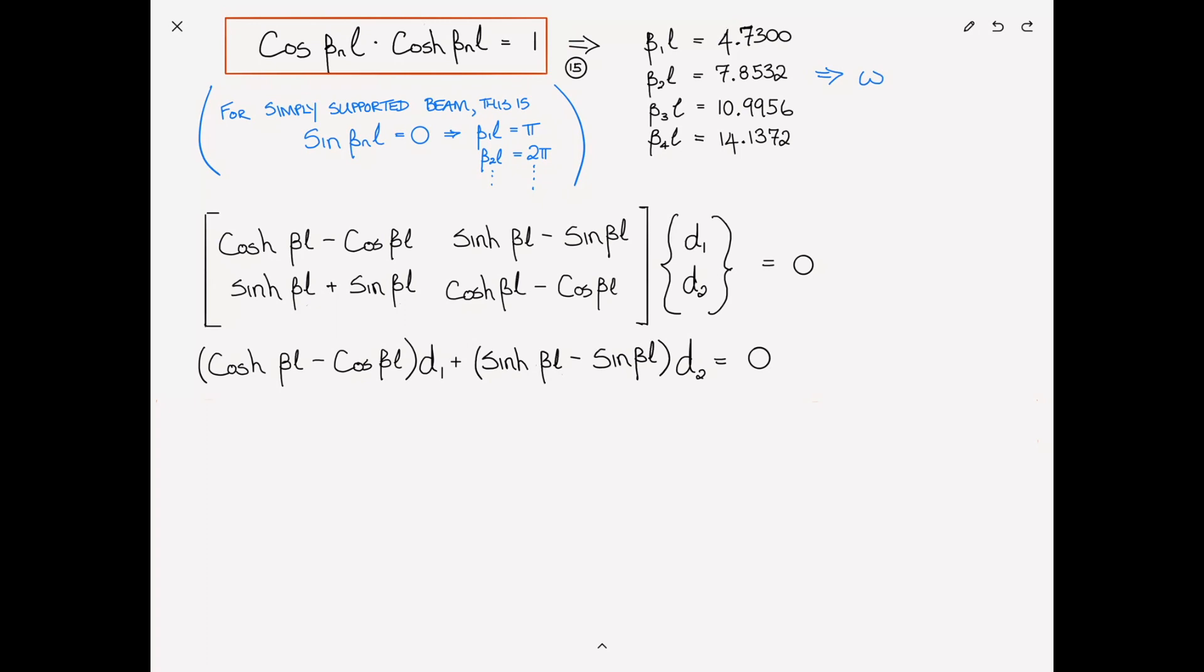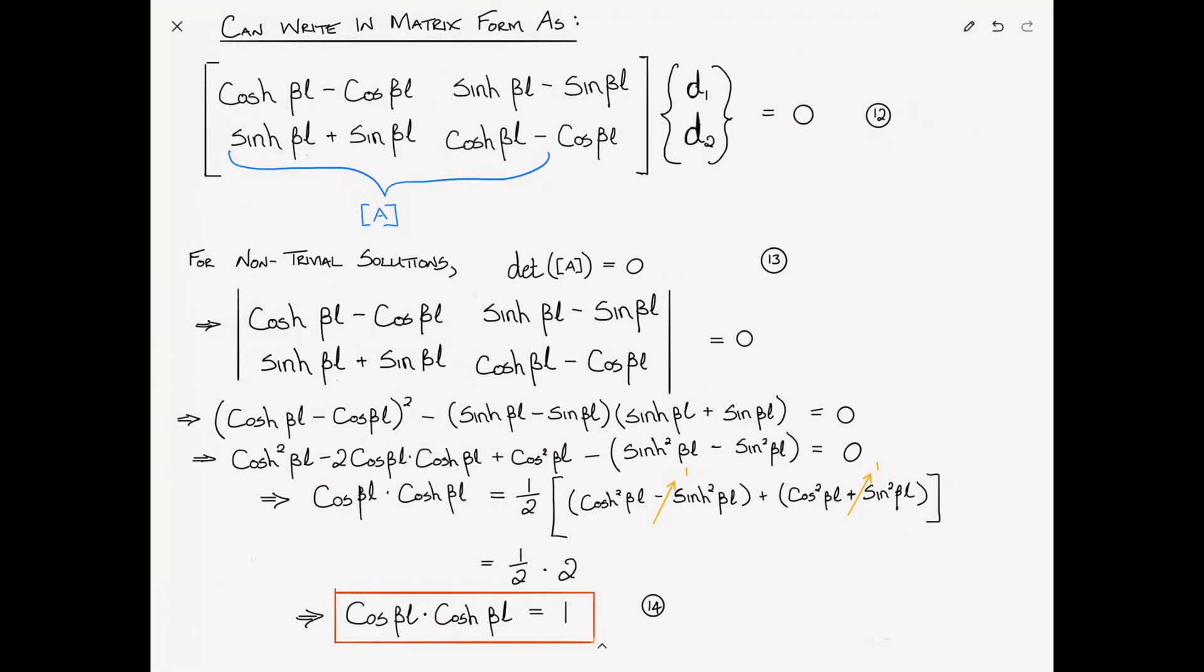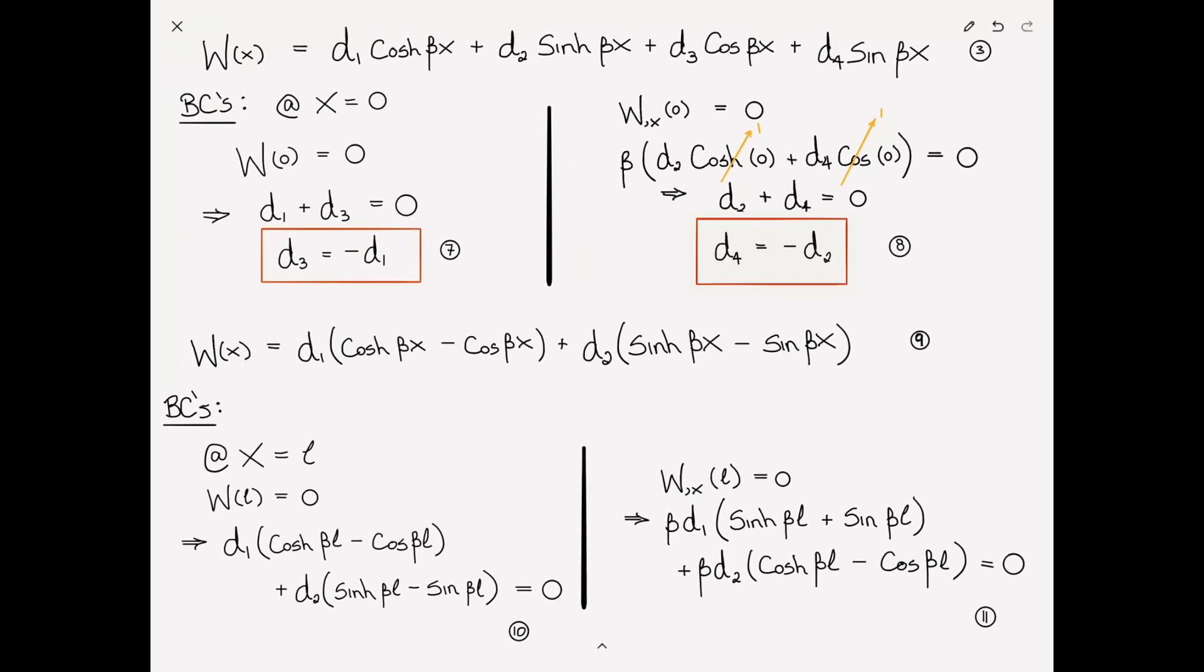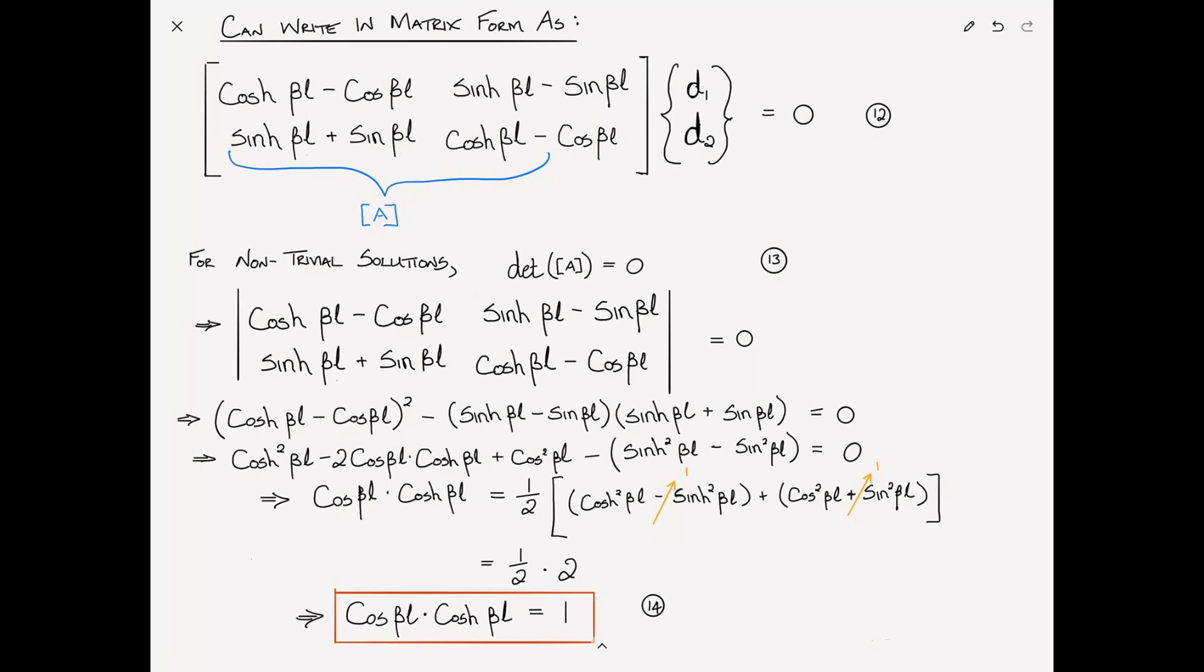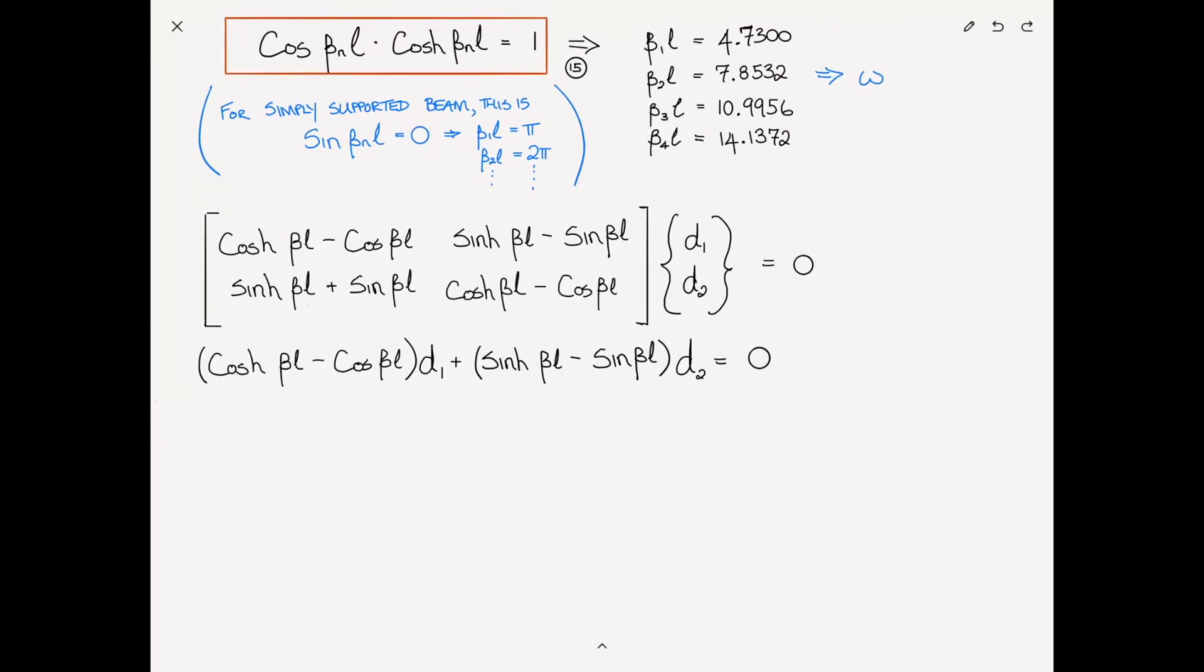And now we can write d1 in terms of d2, right? We just bring this to the other side with a negative, and we divide by this. And because we can solve for d1, we can go back to our equation here, this equation number 9, and we can substitute d1, which is now in terms of d2, back in there.